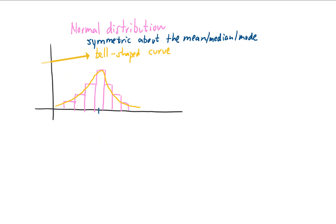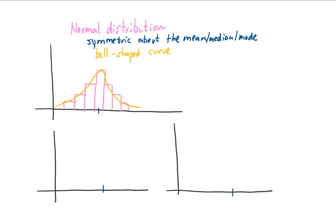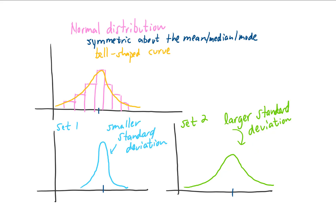Let me show you a couple of normal distributions for comparison purposes. Let's say these two distributions have the same mean, median, and mode. If we compare these two sets, this one over here has a larger standard deviation — that's because the data seems to be spread out a little bit more, and there's a little bit more variety in the data.